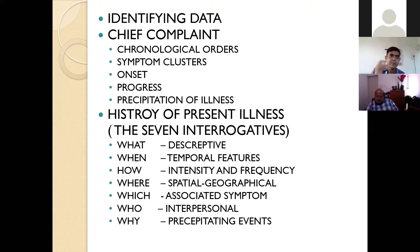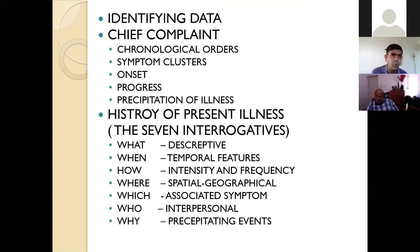According to ICD-10, acute onset means within one month. After one month, we call it subacute or chronic onset. Acute onset means all symptoms have developed and reached a peak within a short span of time. This is important because in acute onset, we always try to identify some stressors — the precipitating factors of the illness.